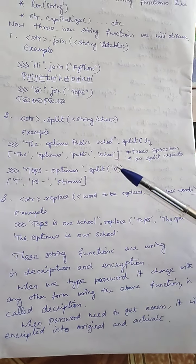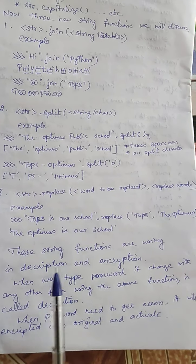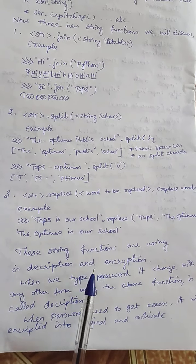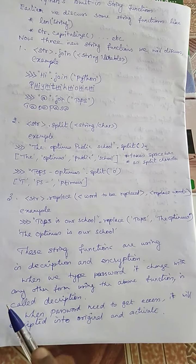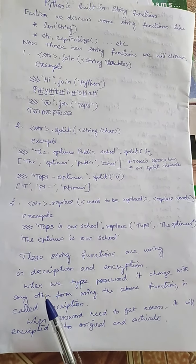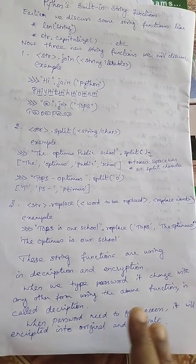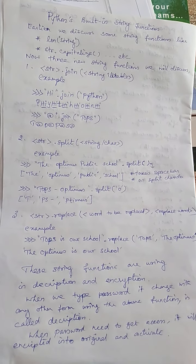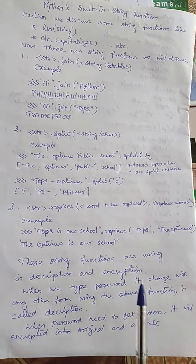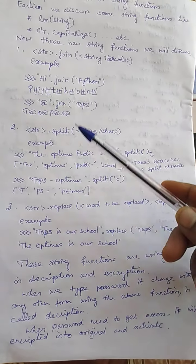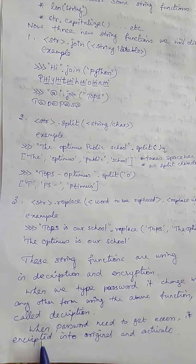Now we discuss why we want to change this immutable string — for what purpose. These string functions are mainly used in decryption and encryption. When we type a password, it should not remain as-is, because other people can recognize it. So we change the password into some unreadable code using these functions — that is decryption. When the password needs to be verified, the process is reversed — that is encryption — so the original password is restored and executed.